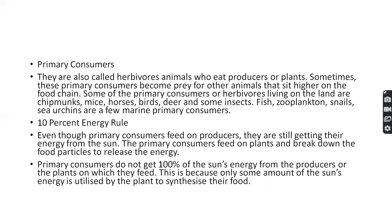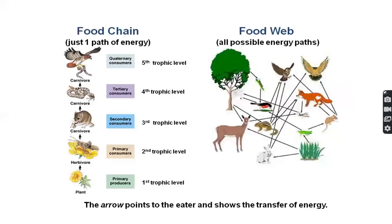The 10% energy rule: for example, producers hold 100% of energy. Of that 100%, only 10% is transferred to herbivores (primary consumers). From herbivores to carnivores (secondary consumers), again only 10% of that 10% is transferred. This is the 10% energy rule — at each trophic level, only 10% of the energy is transferred to the next level.